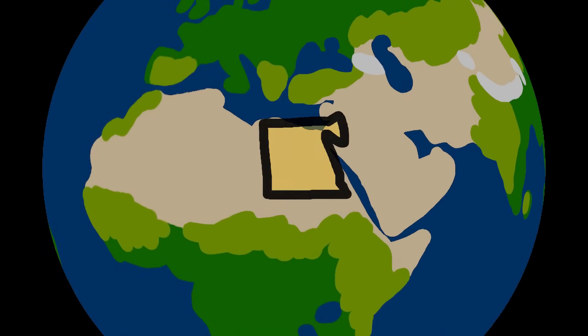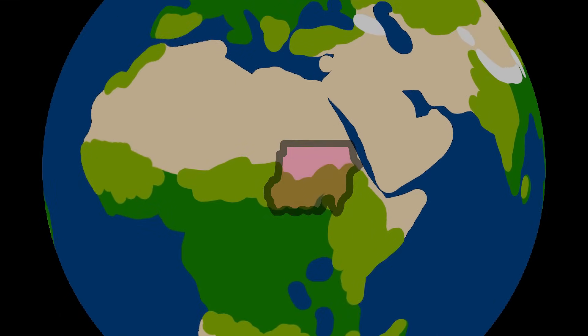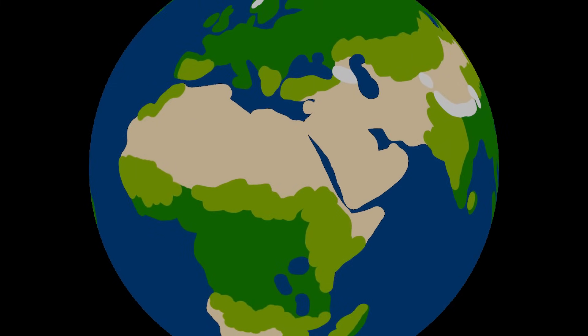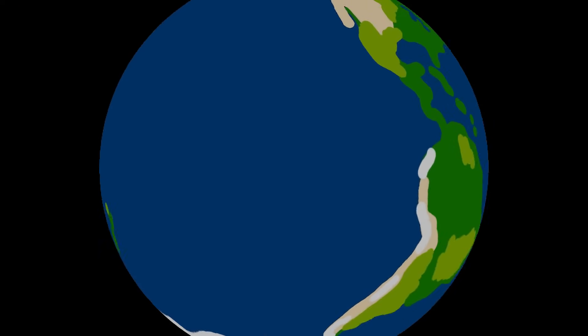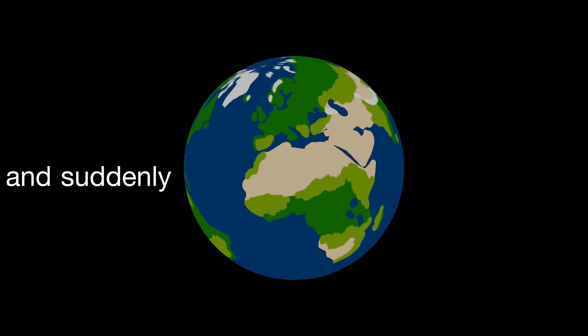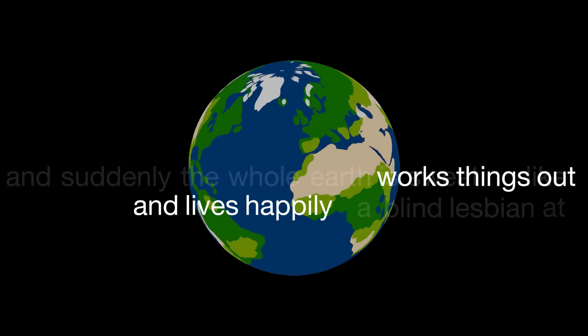In the Middle East, Egypt is upset at Ethiopia and Sudan, because they're tightening their grip around the river Nile, which shapes the livelihoods of half a billion people. Nearby, everyone's arguing over the Tigris-Euphrates, two more mega important rivers. And farby, there's a lot more rivers that a lot more people are arguing over. And suddenly the whole earth works things out and lives happily ever after.